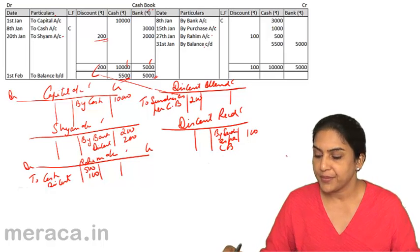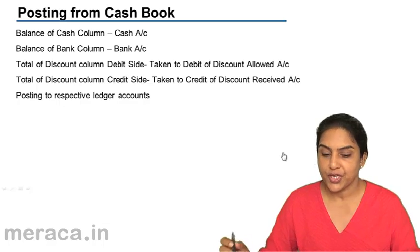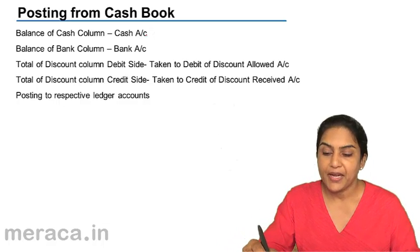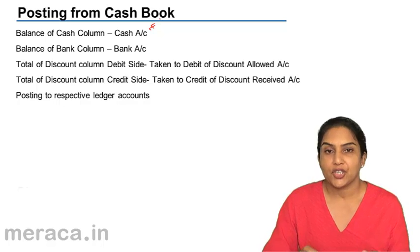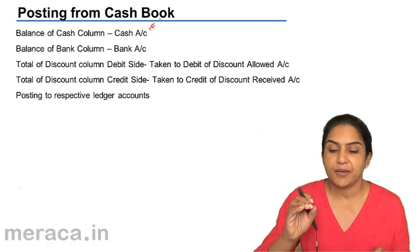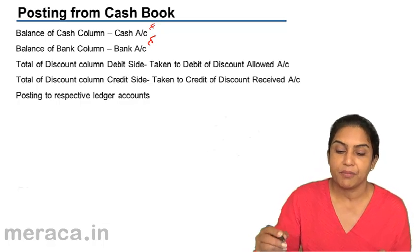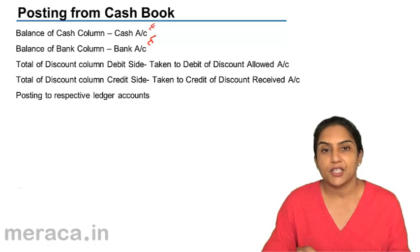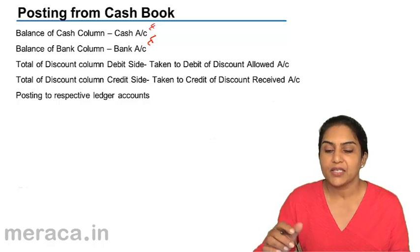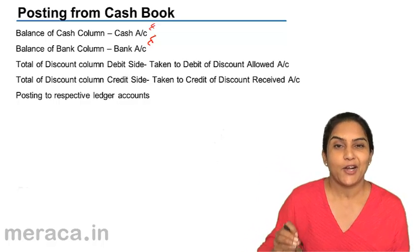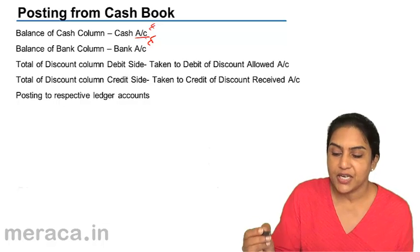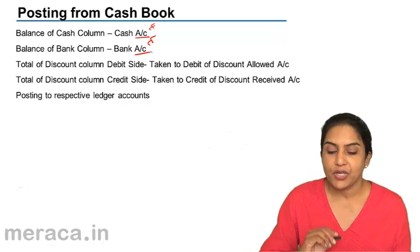Let us summarize the effects of posting. The balance in the cash column is nothing but representative of the cash account — we had 5,500, and that is the balance of the cash account. As far as the bank is concerned, the balance in the bank column is nothing but the balance of the bank account, represented by the bank column in the cash book.